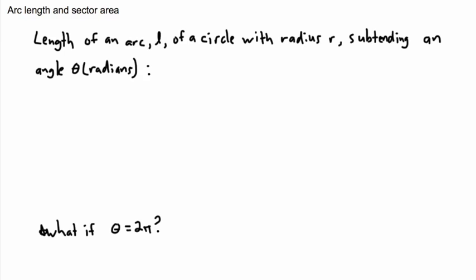Something related to radians and trigonometry is something called arc length and sector area. I'm going to start off with the length of an arc. The length of an arc, L, is with a radius of R that subtends an angle theta in radians.